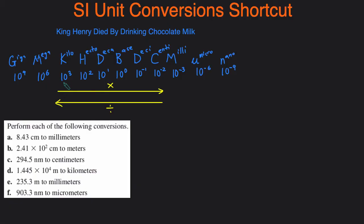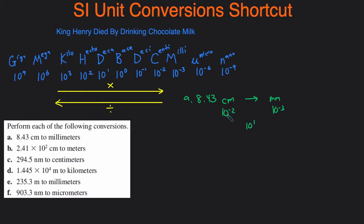Now that you have those prefixes memorized, we can move into the problems and I can show you the shortcut. This first one, we're converting 8.43 centimeters into millimeters. Centi corresponds to 10 to the negative 2 and milli corresponds to 10 to the negative 3. Then you just take the absolute difference between the exponents — negative 2 minus negative 3, take the absolute value, and that gives you 1, so the factor is 10 to the 1.